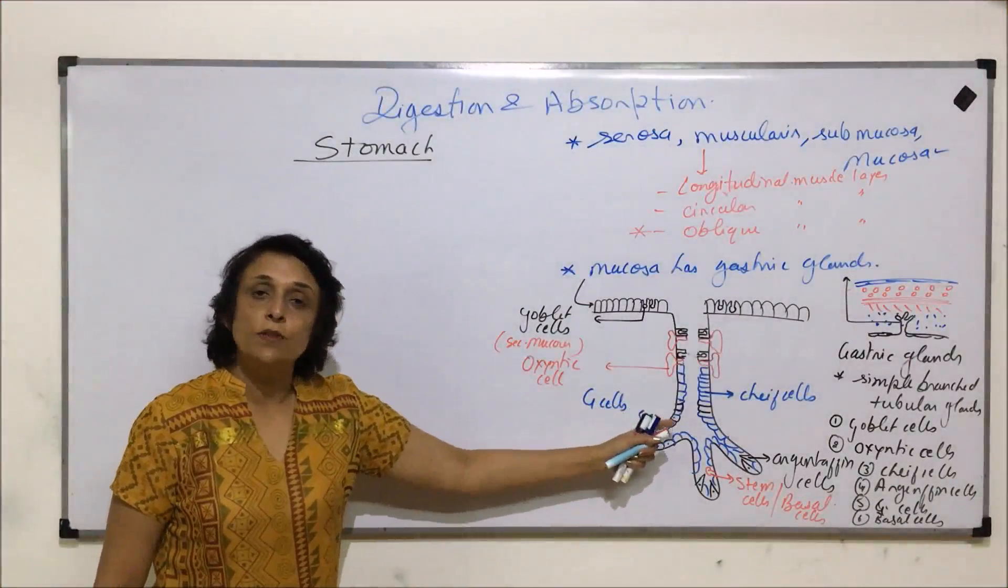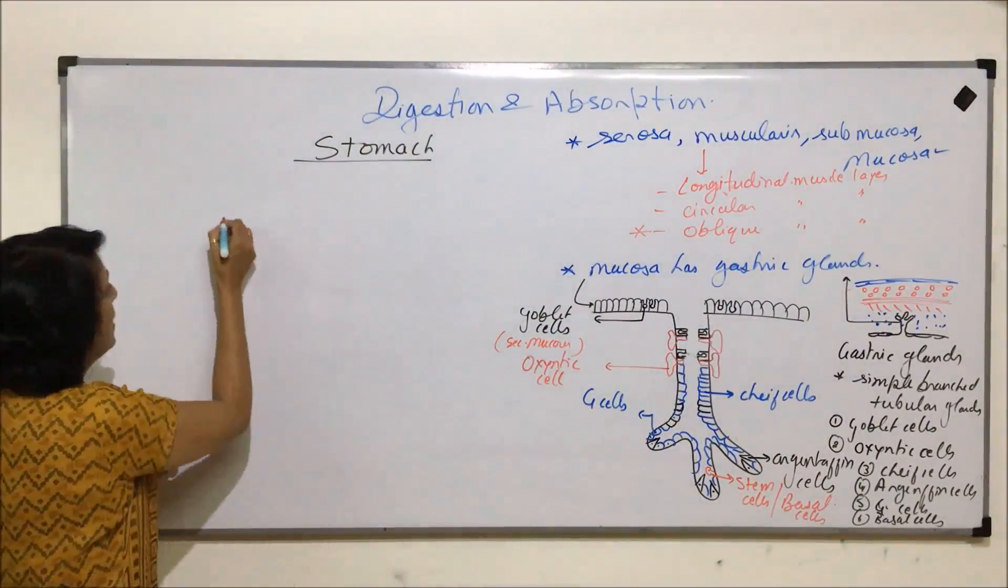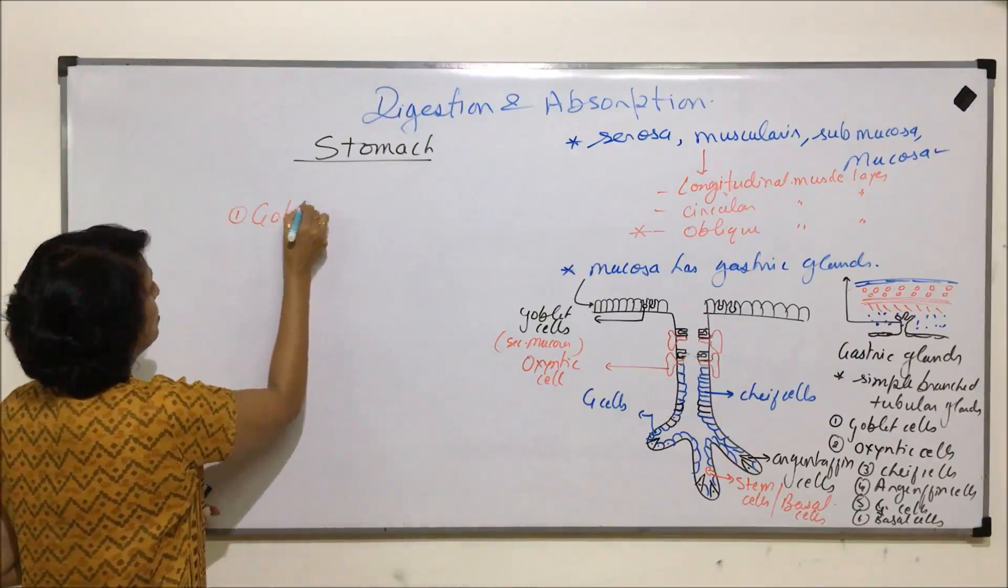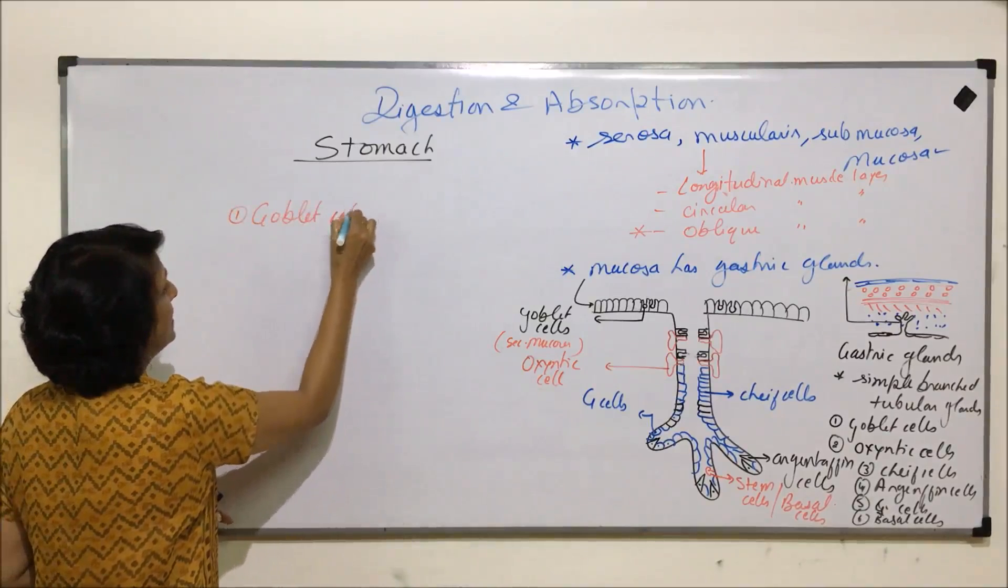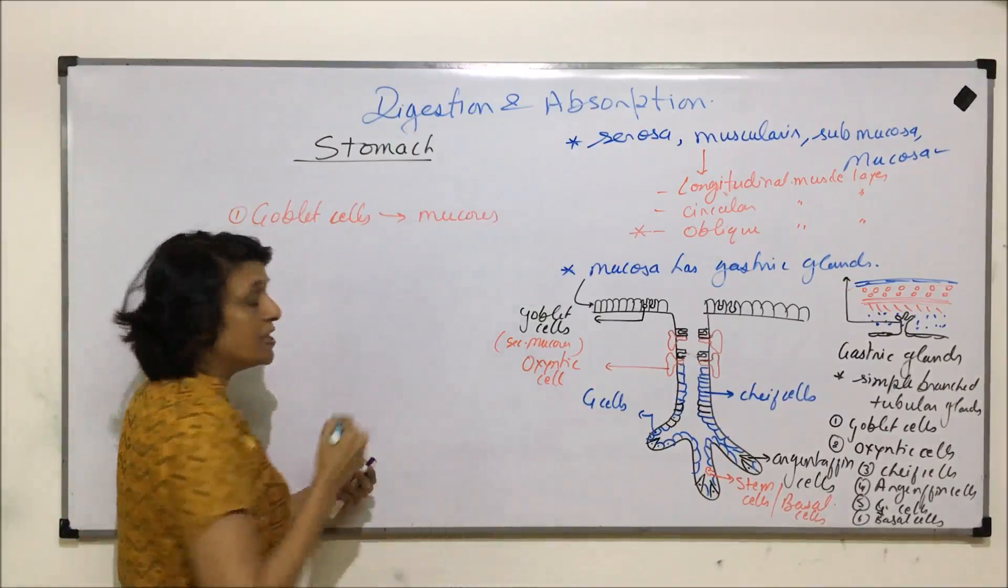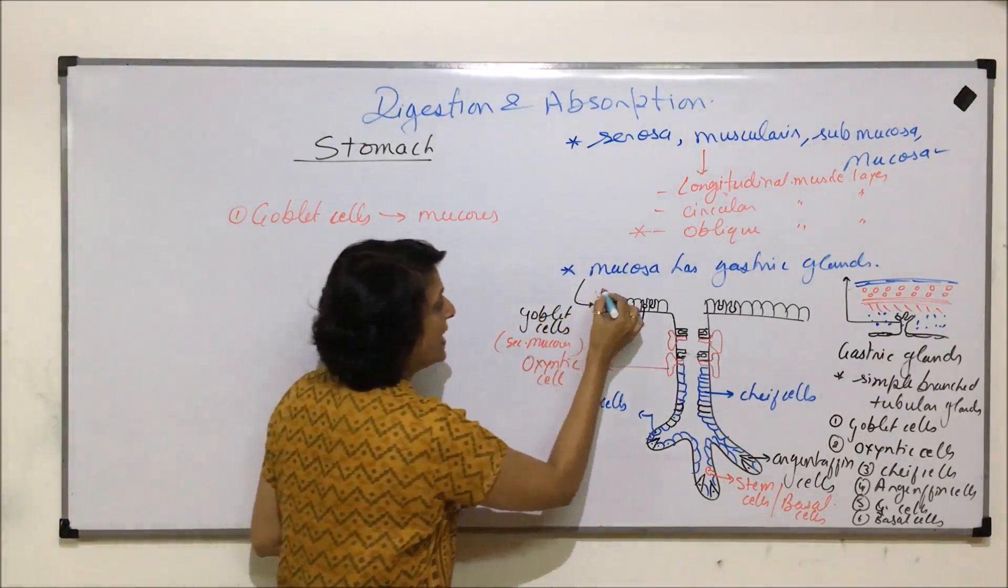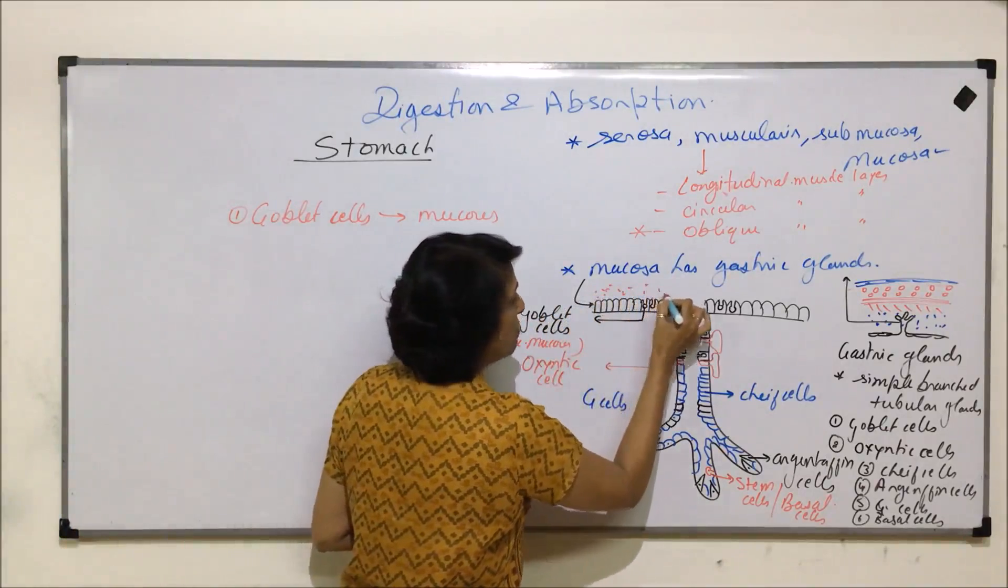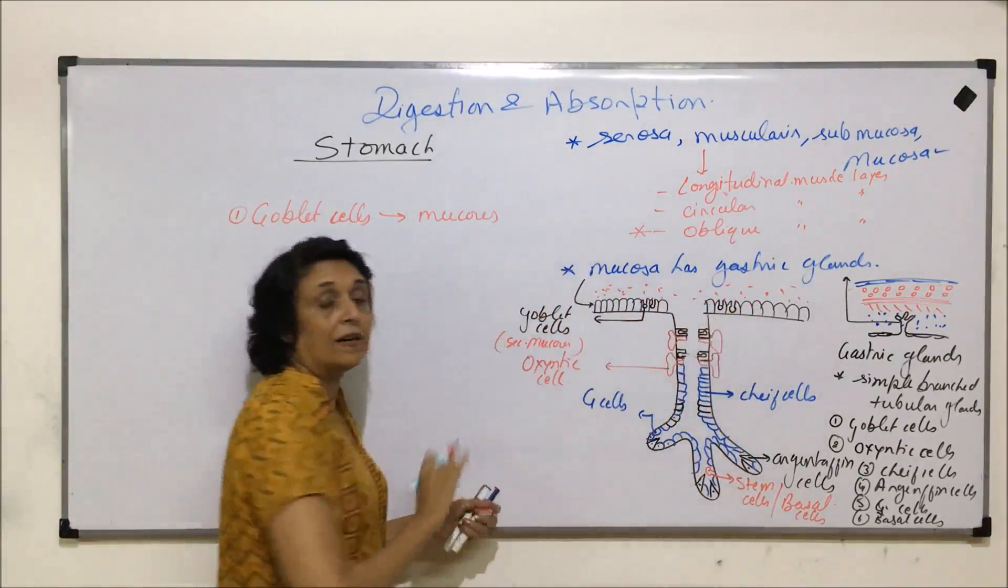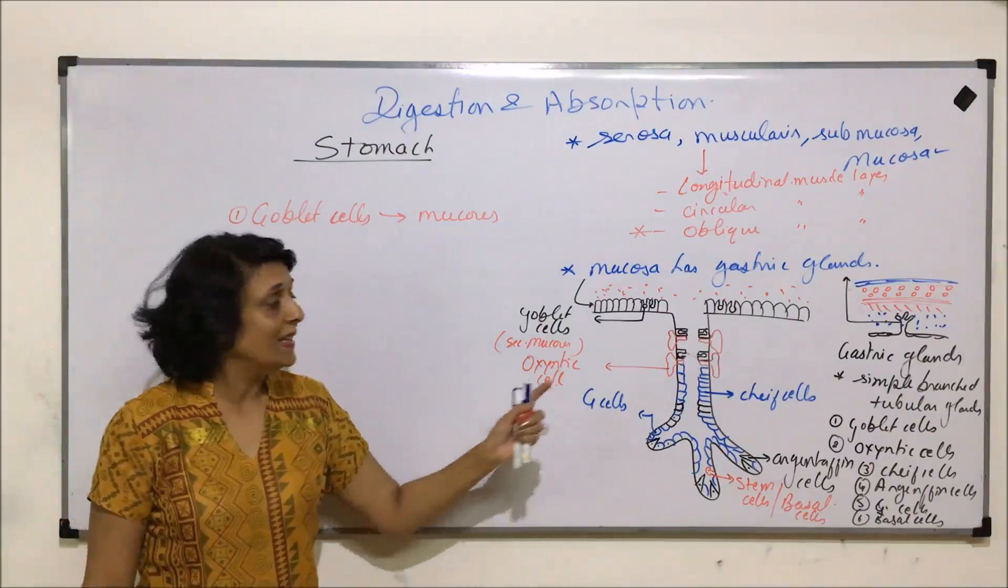Let us now write down these cells and their other names and secretions. The first one which we wrote there, that is goblet cells, they secrete mucus. And this mucus is thick and it makes a thick lining over this mucosa layer and that is how our stomach lining is protected from acids and the enzymes.